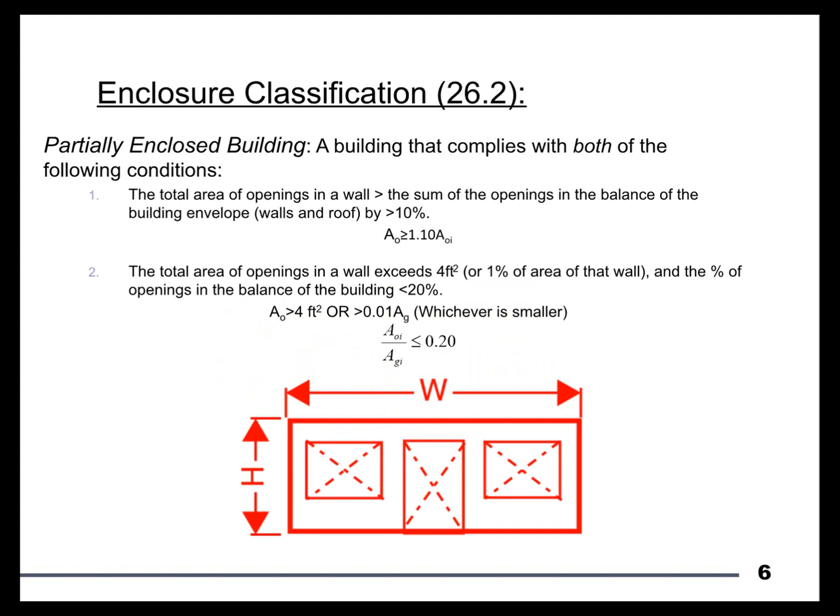A partially enclosed building is a mouthful, and I'm not going to go too deep into it yet, because the initial reaction when you see a definition like this is to check out and say the wind code is too complicated — something I'm going to push against quite hard today. This is a two-part definition. The first part suggests the total area of openings in a given wall needs to be greater than the sum of the other openings by more than 10% — what's in needs to be greater than what's out by more than 10%. The second part has nuances around minimum opening size, but importantly the balance of the building envelope needs to be less than 20% open.